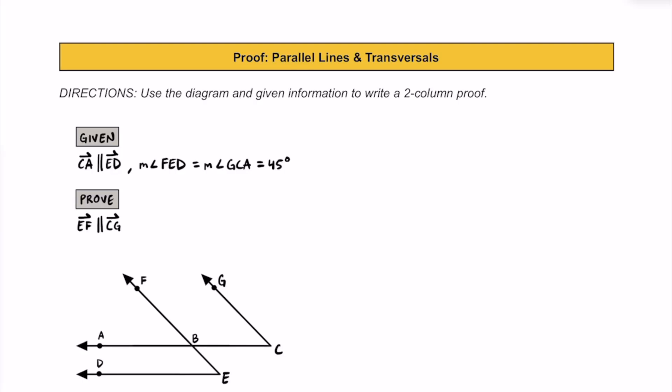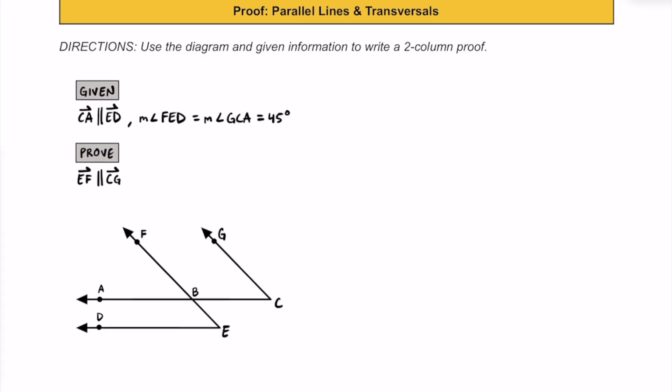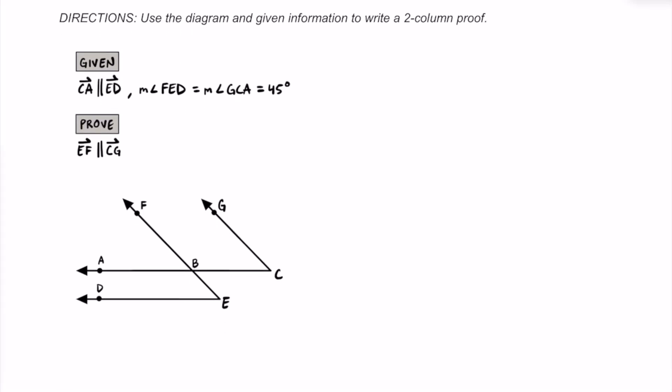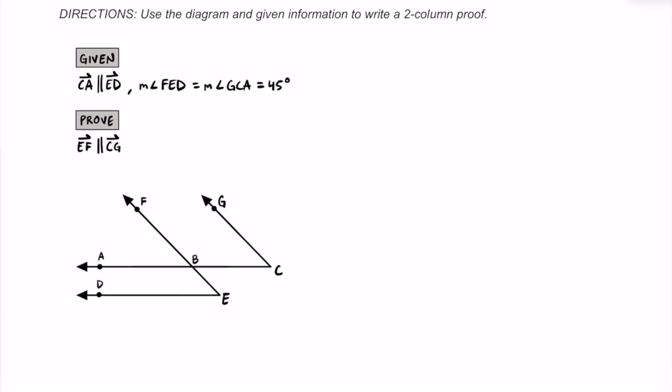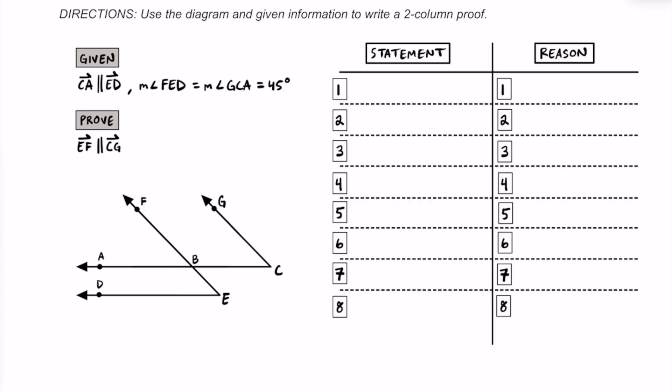Let's practice writing a proof together. This particular proof is dealing with parallel lines and transversals, so let's try to apply anything we know about those to this proof here. Let's start with our given information. I like starting with the given information because it gives us some numbers that we can work with.